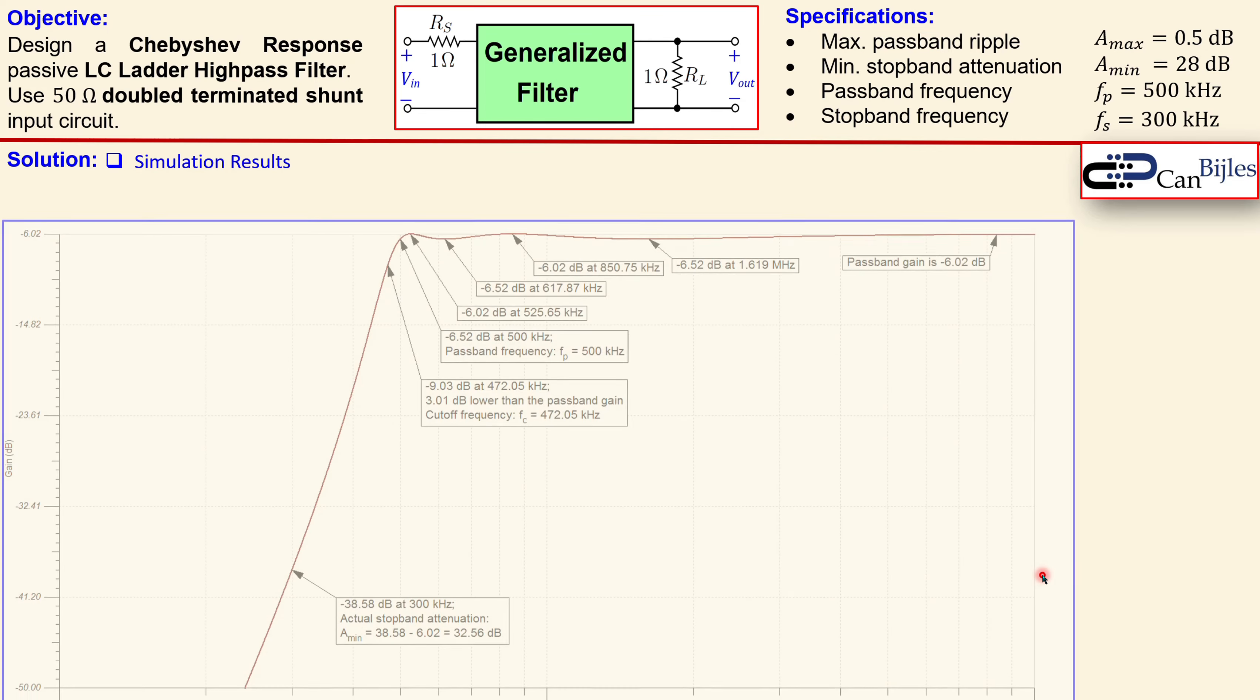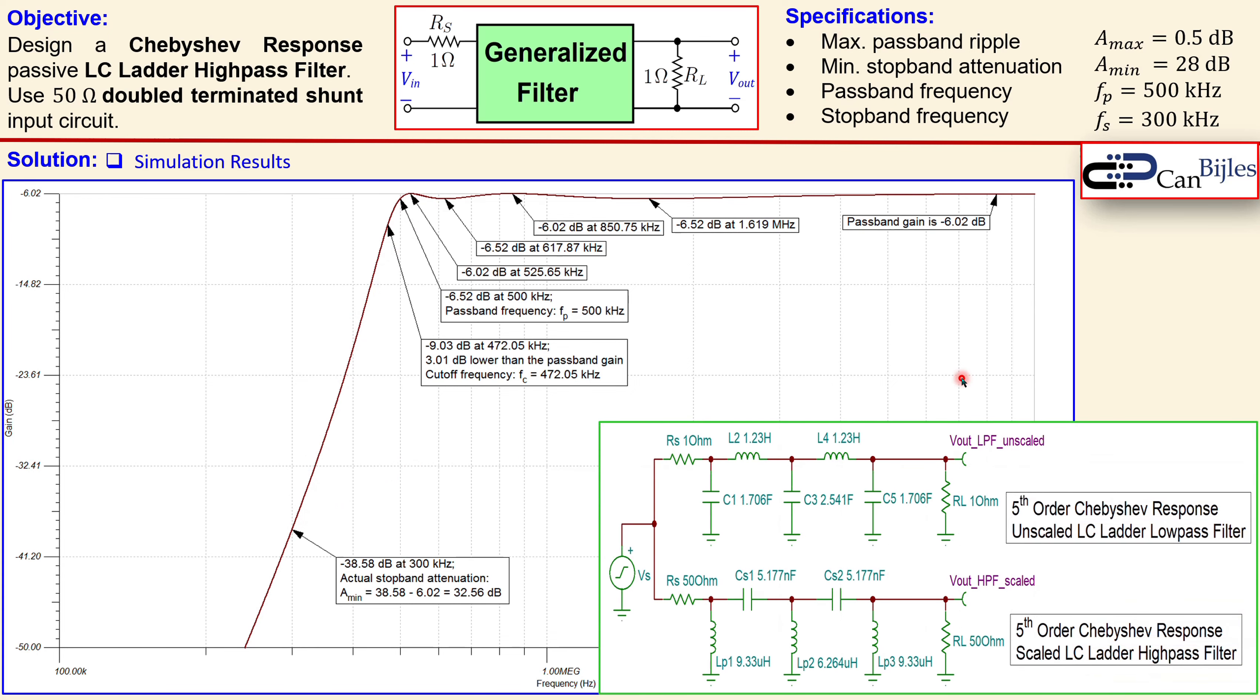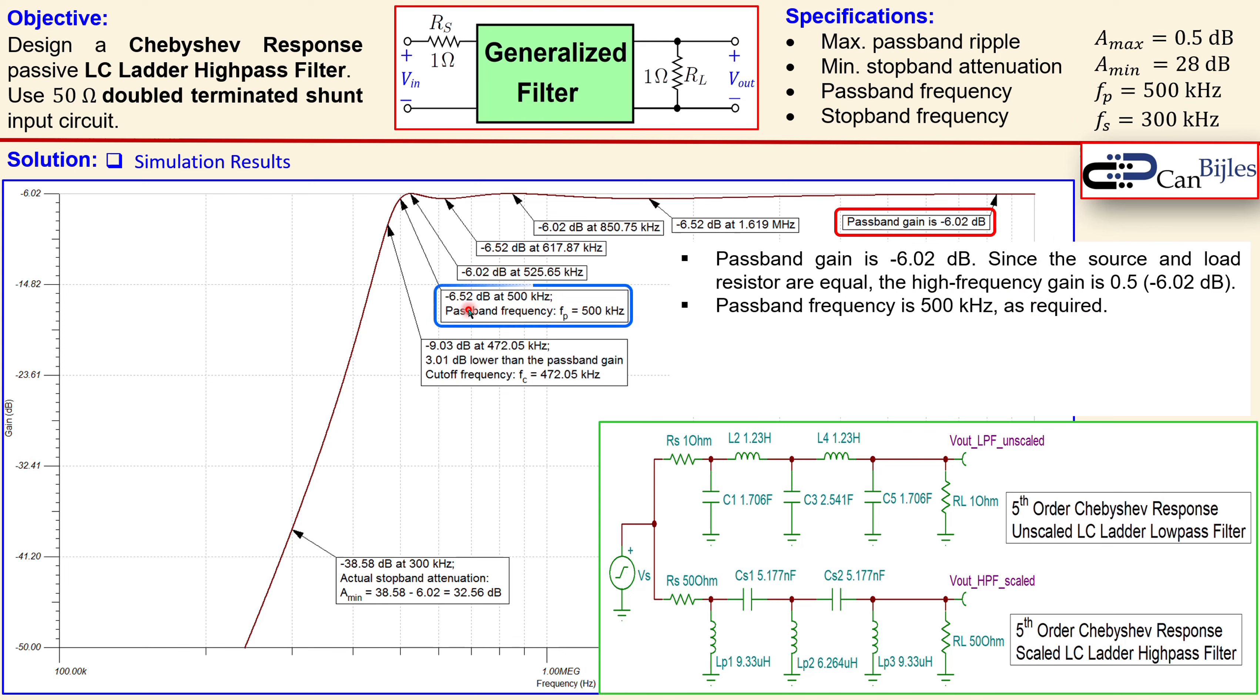Now looking at the simulation results, this is the bode plot for the magnitude only. You see also the circuit here and we see some label scales, so let's go one by one. The passband gain at high frequency is 0.5. Why? Because at high frequencies the inductors are open and the capacitors are perfectly short, so you get only rs and rl. That's 50 ohms over 50 plus 50, so that means 1 over 2, and 20 log 0.5 is minus 6.02 dB approximately. That's correct. The passband frequency is 500 kilohertz as required. You can see that because this is minus 6.02 dB and this label is at minus 6.52 dB, so it's actually 0.5 dB down.